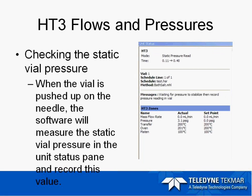Checking the static vial pressure on the HT3 is easy — it is checked automatically when the vial is run. Place your sample vial in the carousel and start your sample run. As soon as the vial is pushed up onto the needle, the software will measure the static vial pressure and display it in the unit status pane. It also records this value in the sample history. This makes it much easier to measure the static vial pressure if you have different matrices from sample to sample. A static vial pressure of zero during a run indicates that a vial was not crimped correctly, so the sample history log in HT3 software is very vital to help you monitor your samples.